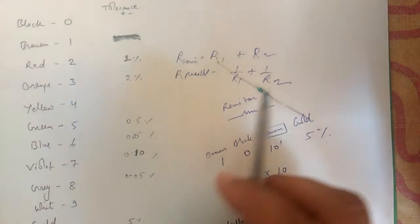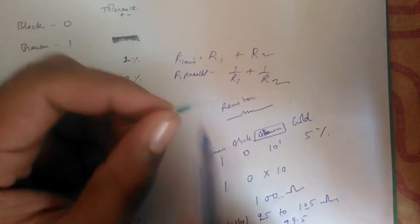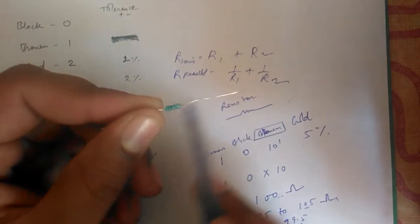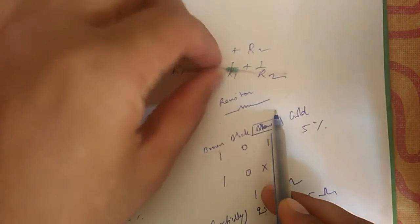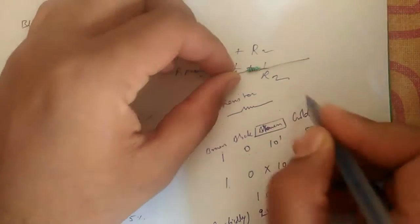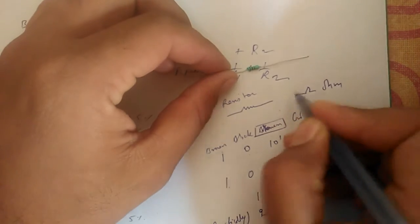Hello, today we are going to learn the basics of resistors. This is the electronic component which resists the electric current in the circuit. The symbol is this and the unit is ohm.